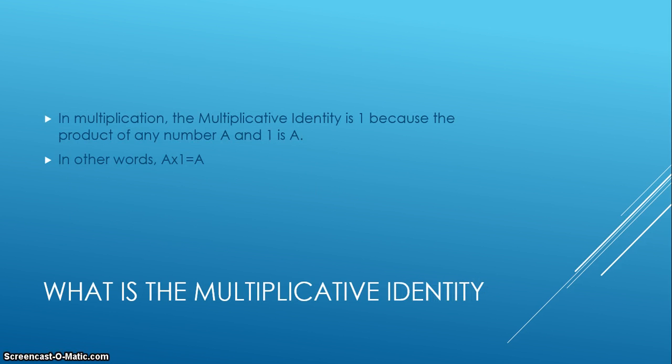So what is the multiplicative identity? The multiplicative identity is one, because when we multiply one by any number, we get that number back.